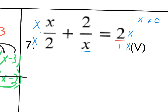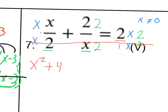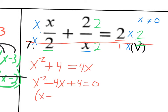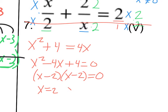All three denominators are now the same. Let's cross those out. We've got X squared plus 4 is equal to 4X. When I bring everything to one side, we get X squared minus 4X plus 4 is equal to 0. That looks factorable — it is X minus 2 times X minus 2, the two things that multiply to 4 and add up to negative 4. Finishing solving, we get X equals 2 for both. Since 2 is not 0, we are okay.